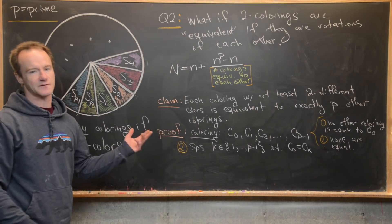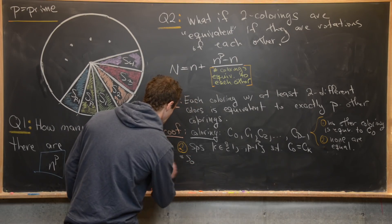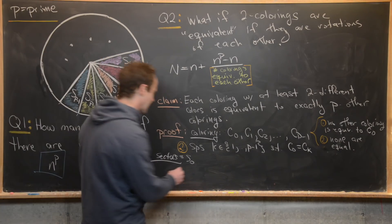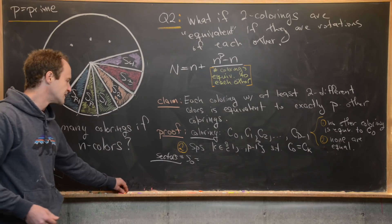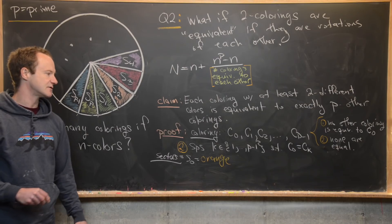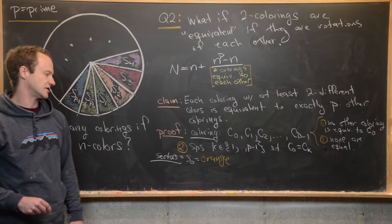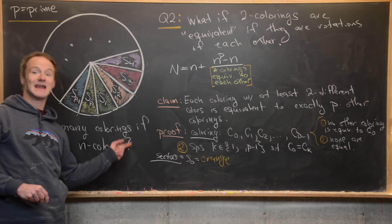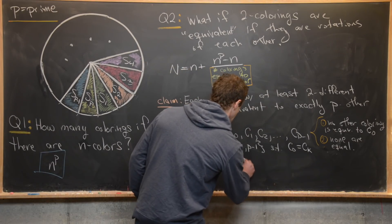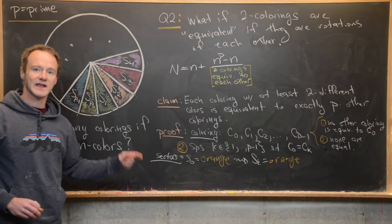Take a sector from C0 — let's say S0, the zeroth sector — and suppose it is orange. Since C0 equals CK, we can make this K rotation and end up with the same sectors on the same spots. So the sector at position K is also orange.